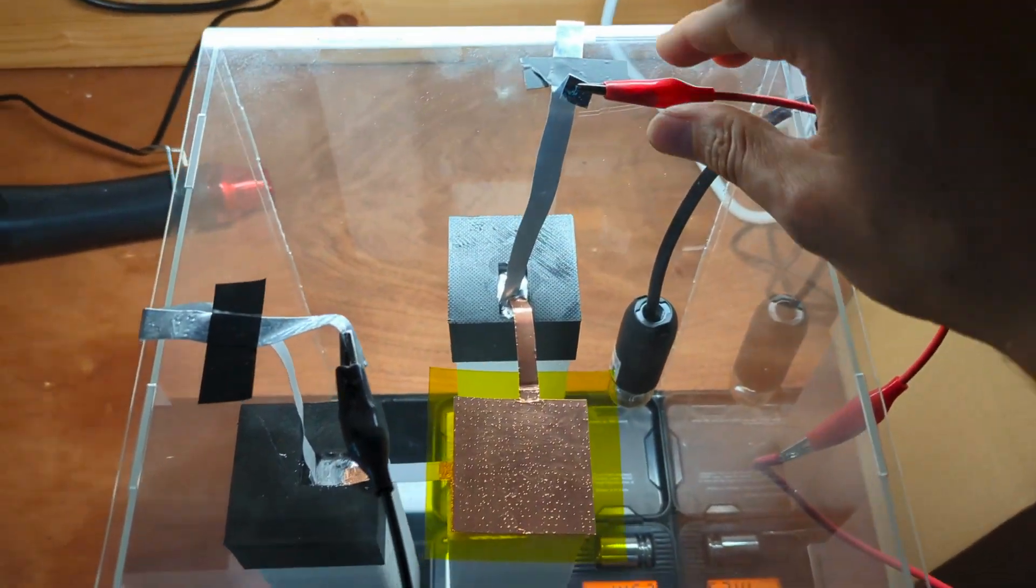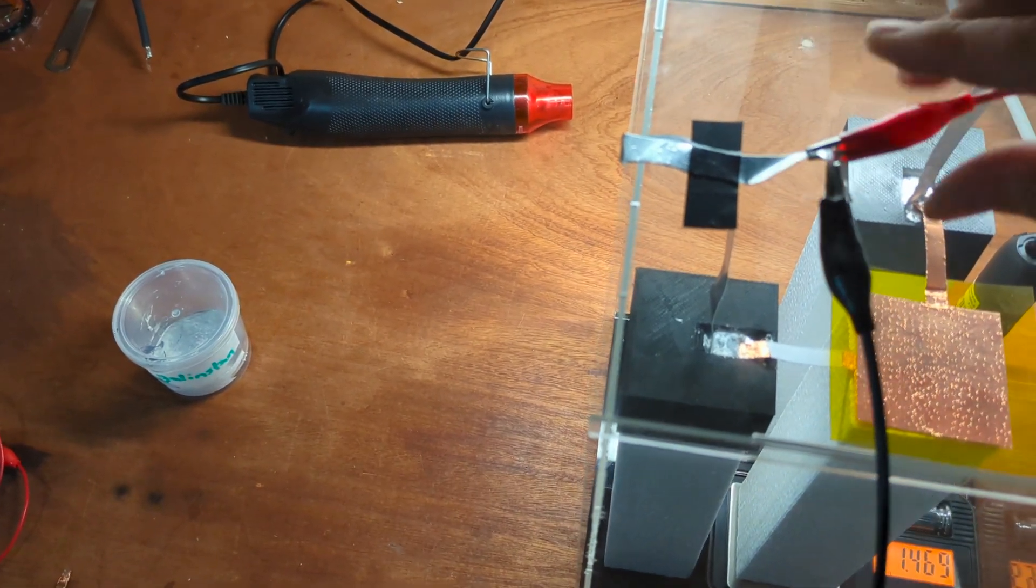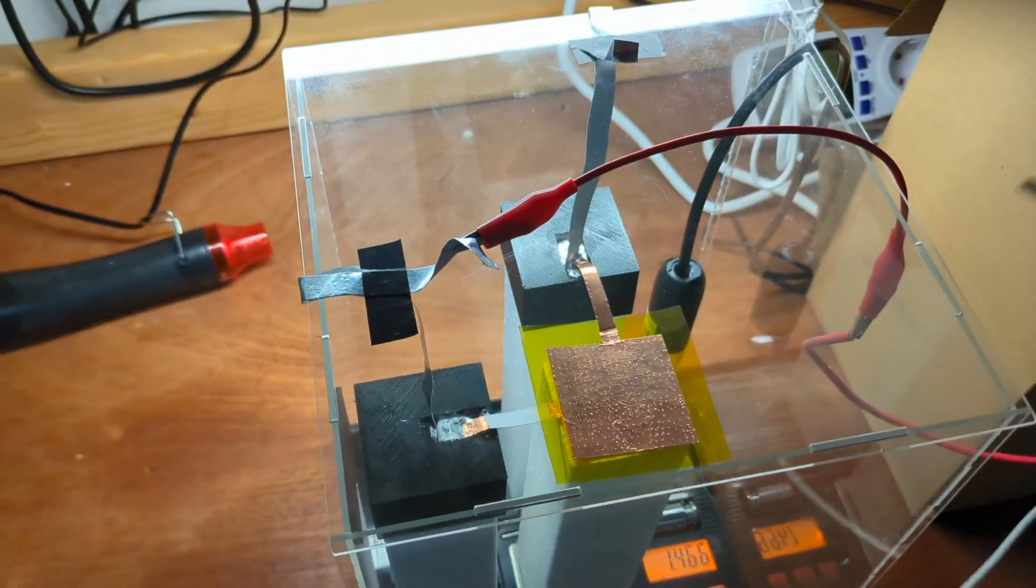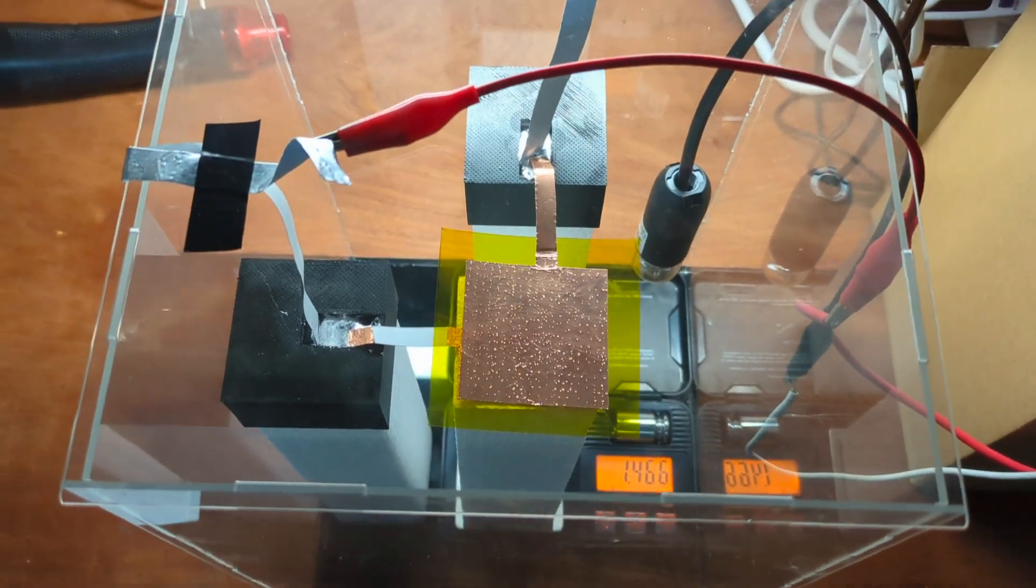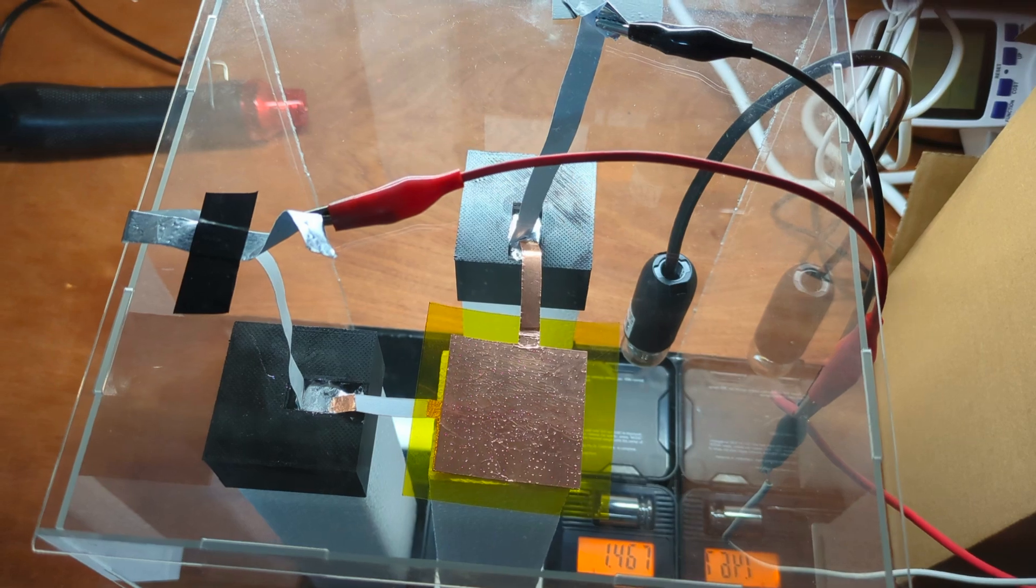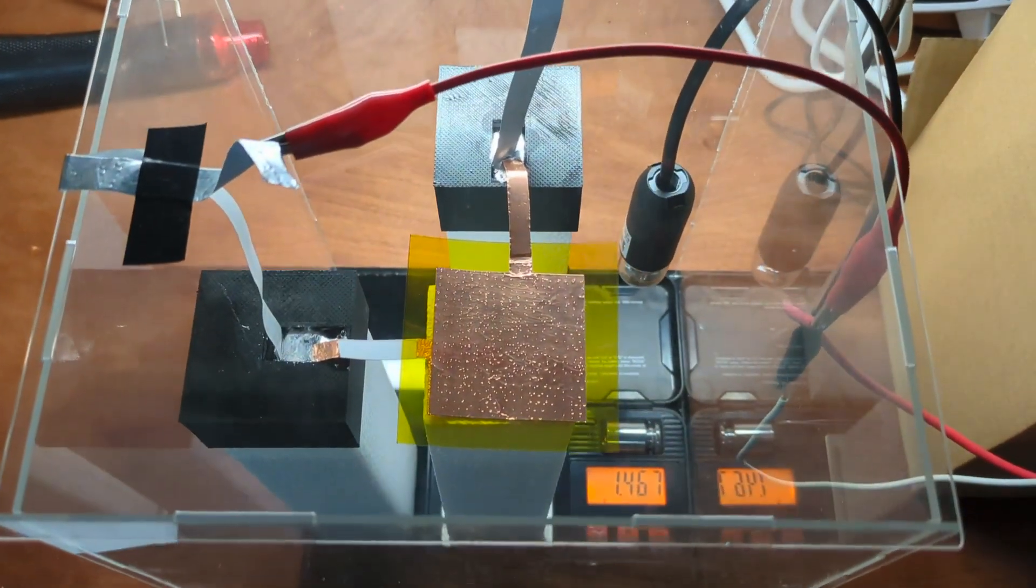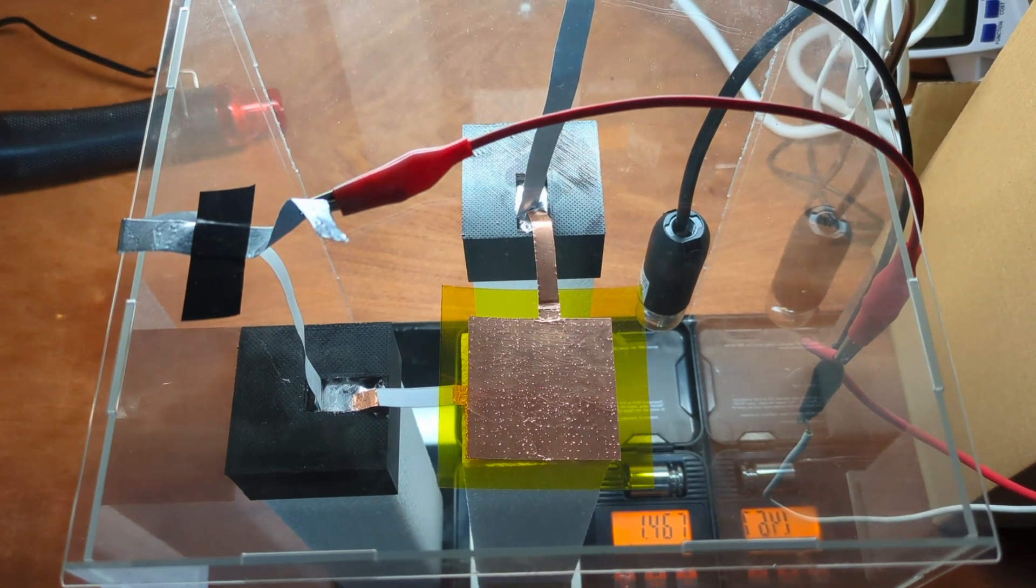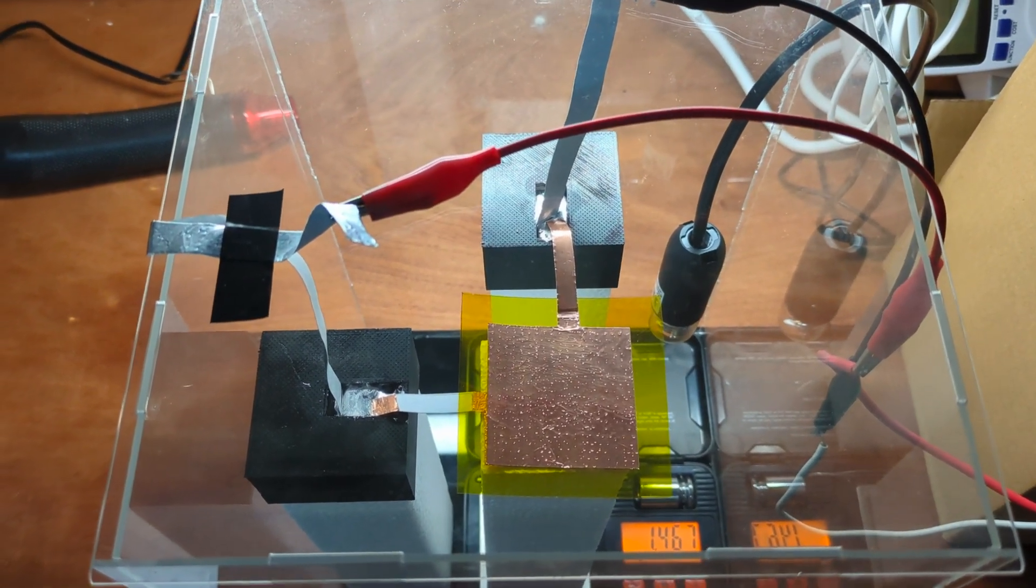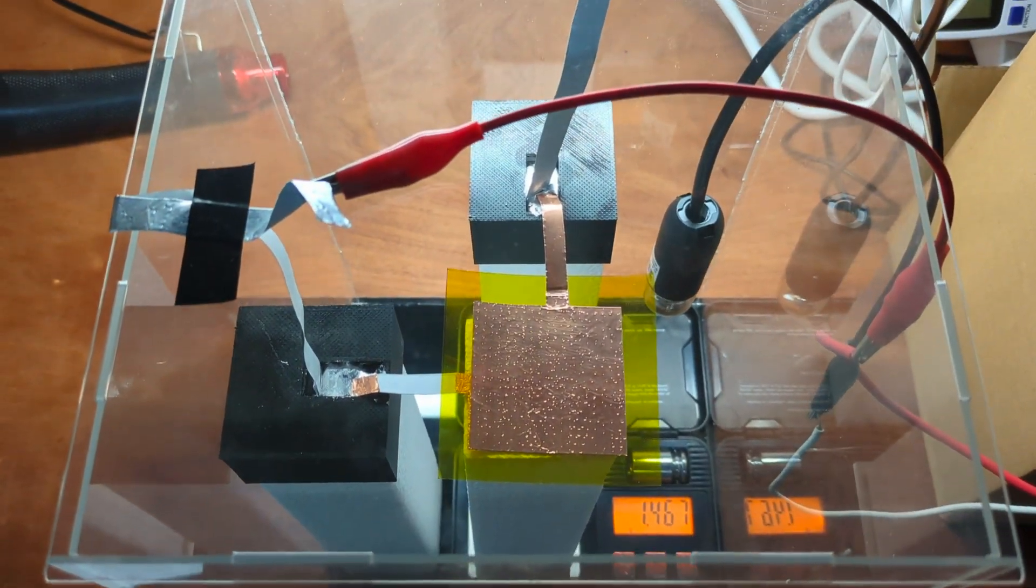So let's try to change the polarity. Change the polarity, so 14.67. I turn on the power supply, let's start turning this up. 14.67, now 2 kilovolts, 4 kilovolts, 5 kilovolts, and it stays exactly the same.